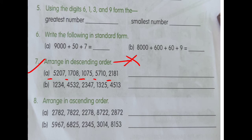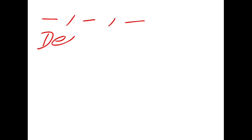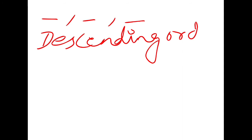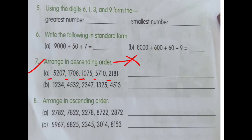After noting all the numbers, write 'descending order' on the next line — this word must be written in your copy. Then we arrange the numbers in order. For the biggest number, we look at the leftmost digits. Two numbers have the largest leftmost digit, which is 5. Since both are equal, we look at the next digit: one has 2 and the other has 7. Obviously, the one with 7 is bigger.